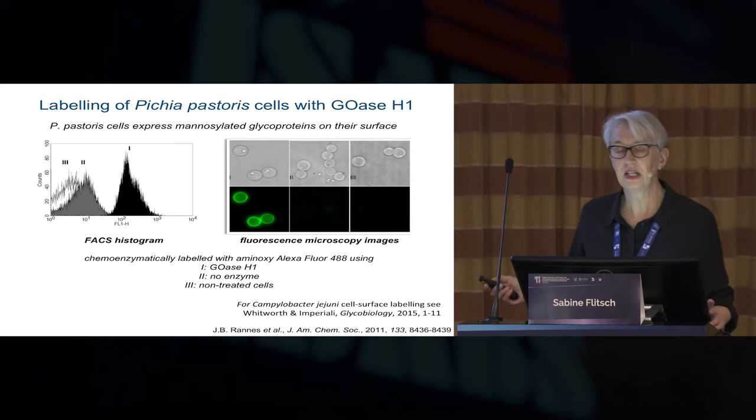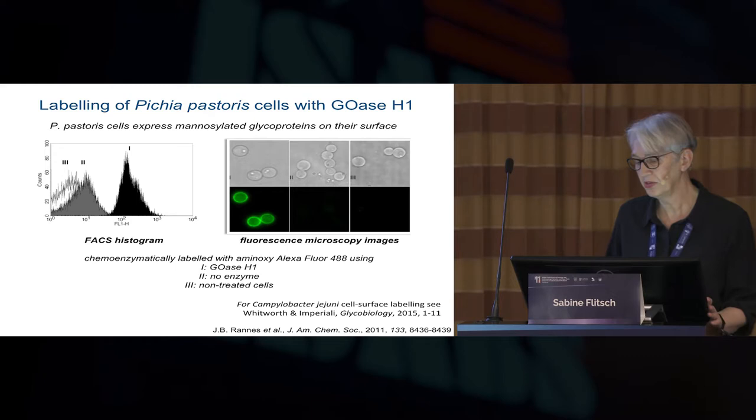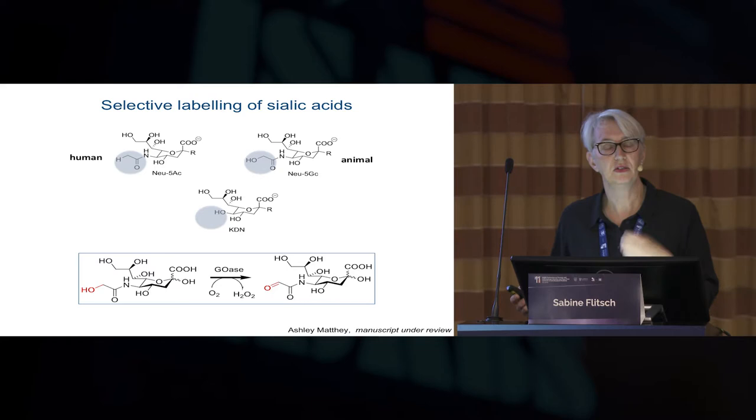Barbara Imperiale recently published quite a nice paper where she used the enzyme to label Campylobacter, which has a selective sugar on the surface. These enzymes are robust and can be expressed in E. coli. If anyone is interested in them, I'd be happy to make them available.